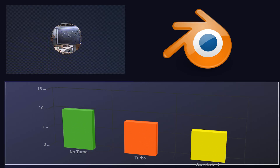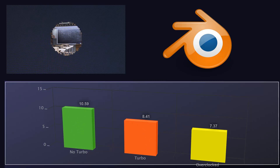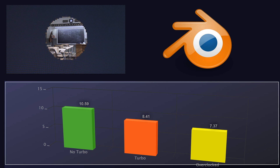Moving on to the Classroom render in Blender: stock with no turbo was 10 minutes and 59 seconds; stock with turbo was 8 minutes and 41 seconds; and then turbo with the overclock was 7 minutes and 37 seconds. That's a huge improvement going from almost 11 minutes all the way to 7:37. A lot of that gain was just from turbo — turbo is definitely needed.